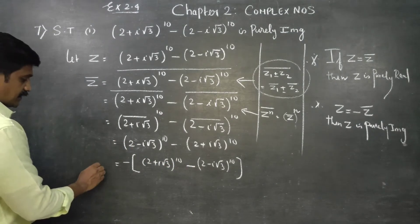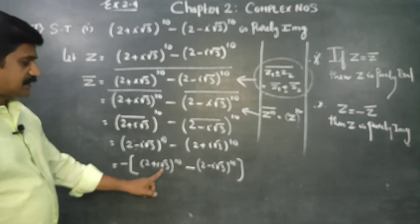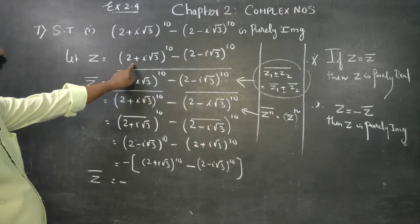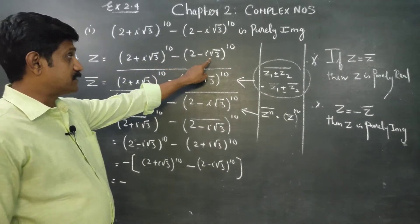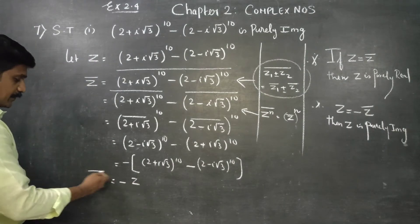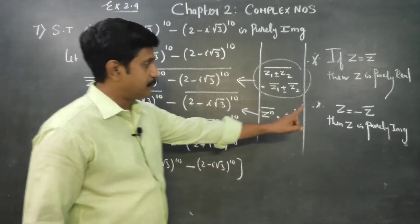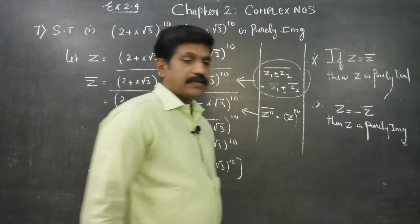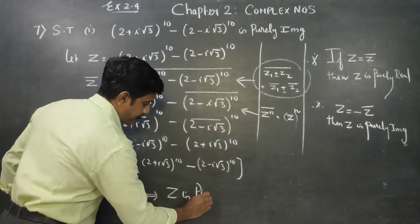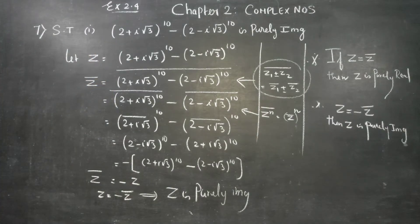So we started with Z, and found that the conjugate of (2 + i√3)^10 minus (2 - i√3)^10 equals minus of the original expression Z. Since Z-bar equals minus Z, this implies Z is purely imaginary.